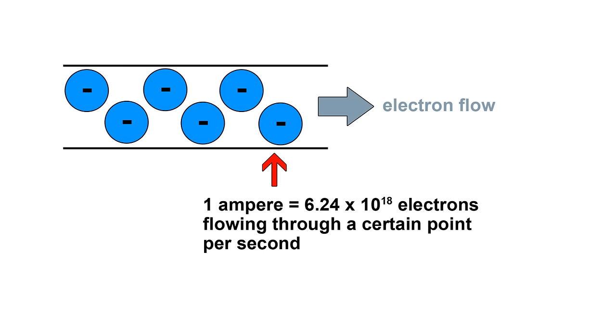Now how do we measure electric current? Well you've probably heard of the term amp, which is short for ampere. An ampere refers to the amount of electrons that are flowing per second through something that conducts electricity. One ampere is equivalent to 6.24 times 10 to the power of 18 electrons flowing per second.